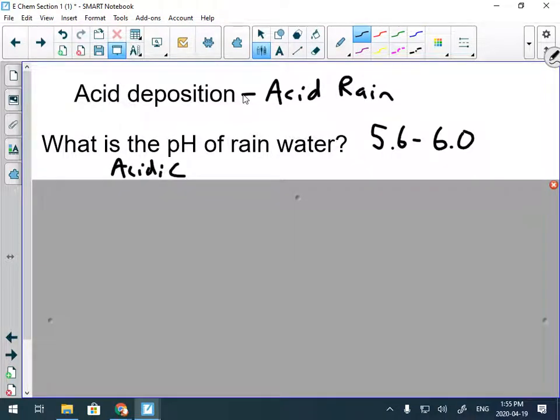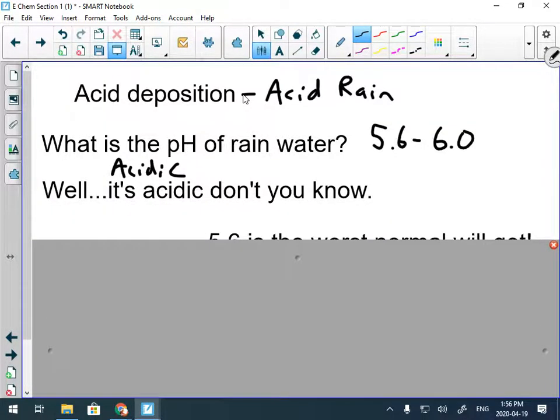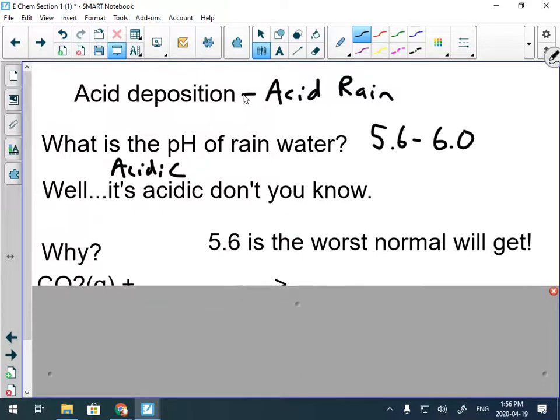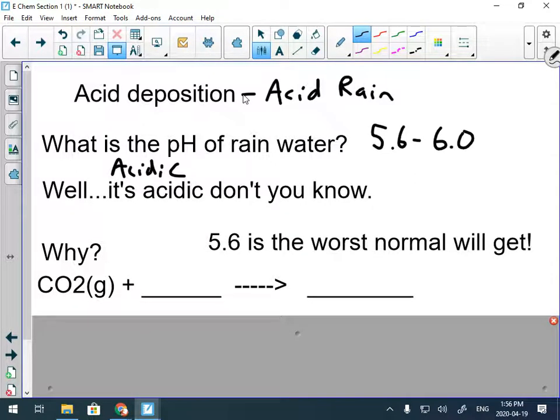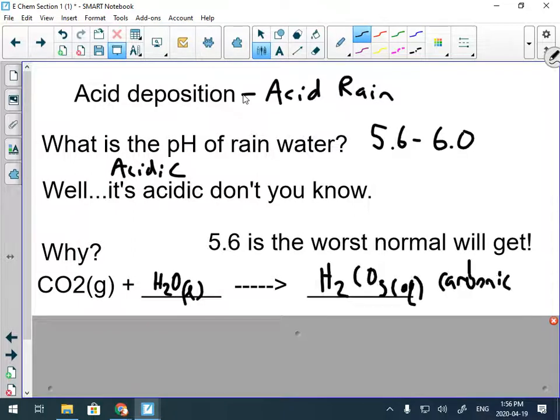So all rain is acid rain by that definition. It's acidic. The reason why 5.6 to 6 is the pH of rain is that carbon dioxide in the atmosphere reacts with water in the atmosphere to make a very weak acid called carbonic acid. So that's why normal rain is acidic.